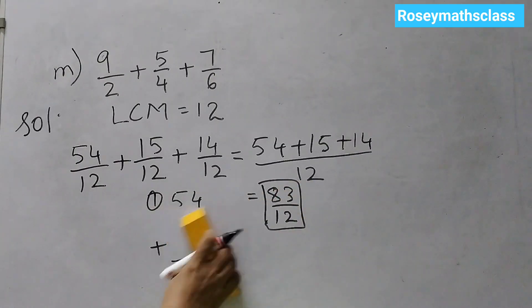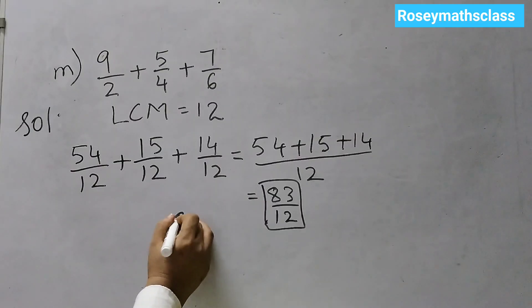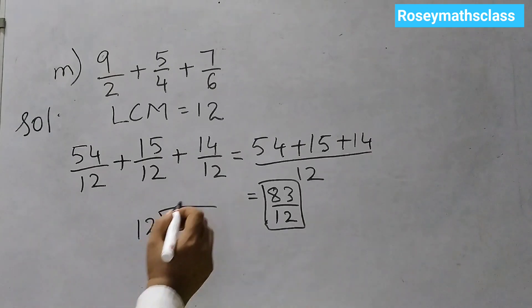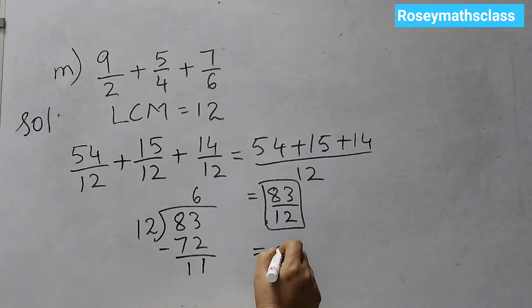Now, we will convert this to a mixed number. 83 divided by 12. 12 times 6 is 72. 3 minus 2 is 1, 8 minus 7 is 1. So, 11. That means the answer would be 6 whole 11 over 12.